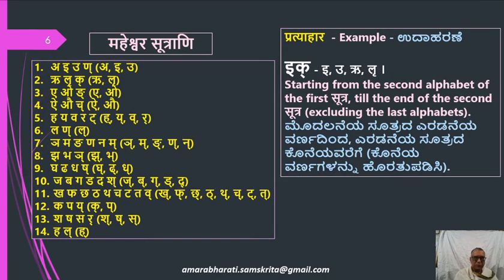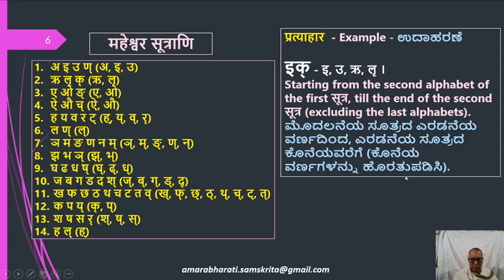We will see one more example: Ik. Starting from the second alphabet of the first sutra, I, to the end of the second sutra, K — all the letters in between: I, U, R, L, R, E, O, R, L, R. That is the Ik Pratyahara.